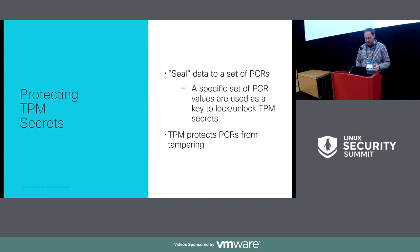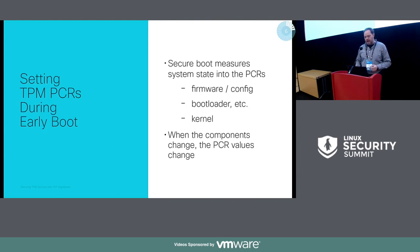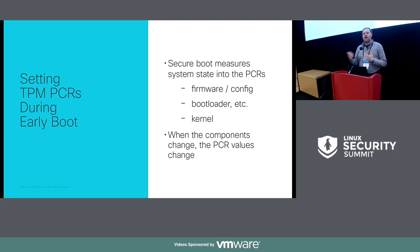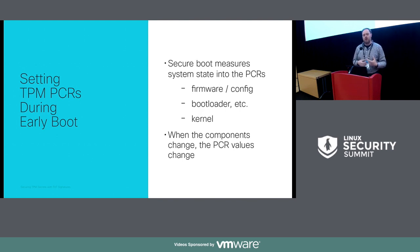How do we actually go about setting the PCRs, especially in early boot? Some of these TPM secrets we might need to access before we've got a full user space up. For example, if this is a storage encryption key used to protect the root file system, we need to be able to unlock it as soon as possible. The easy way to set these TPM PCRs is through secure boot.